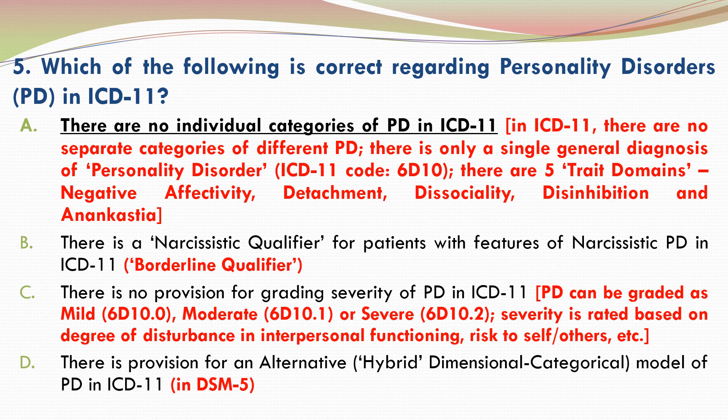C is incorrect because there is provision for grading severity of personality disorder in ICD-11. Personality disorder can be graded as mild, moderate or severe, each with its own diagnostic code. Severity is rated based on the degree of disturbance in interpersonal functioning, risk of harm to self, others, etc. D is incorrect because the provision of an alternative hybrid dimensional-categorical model of personality disorder is present in DSM-5 and not in ICD-11.